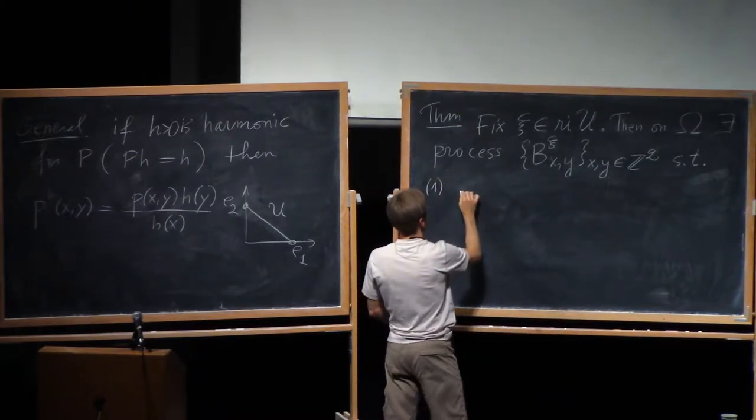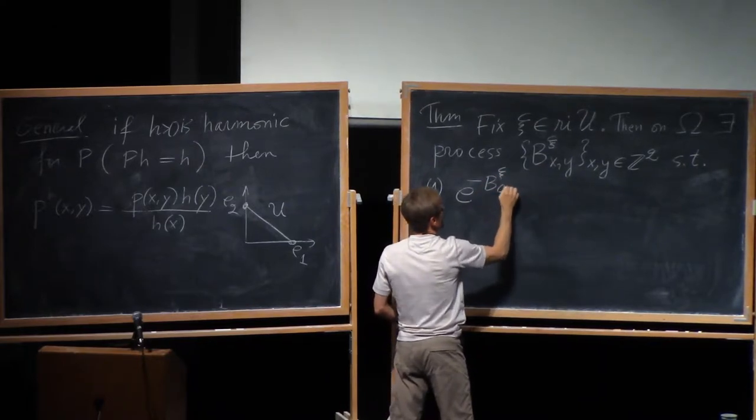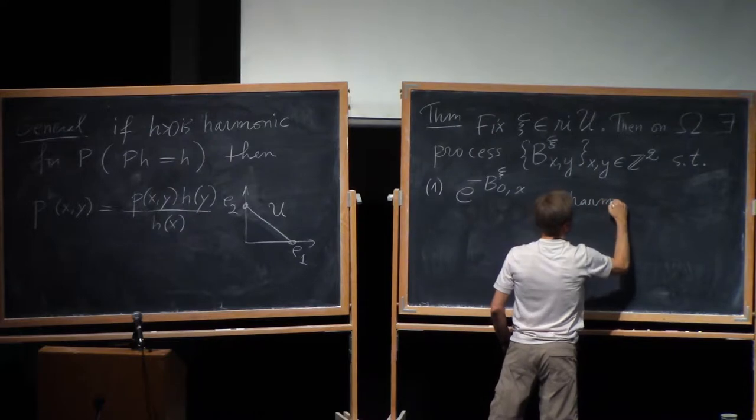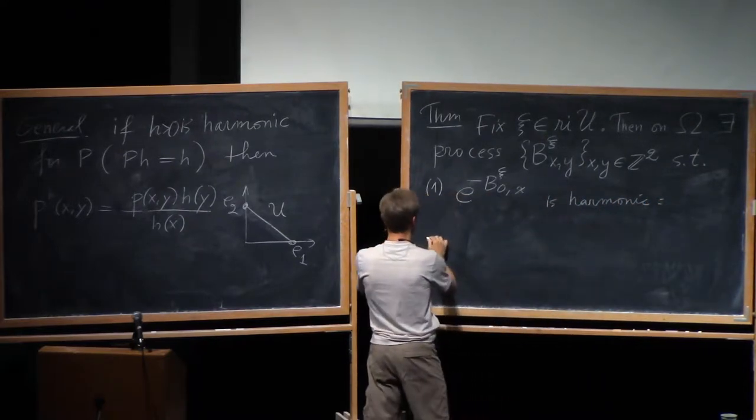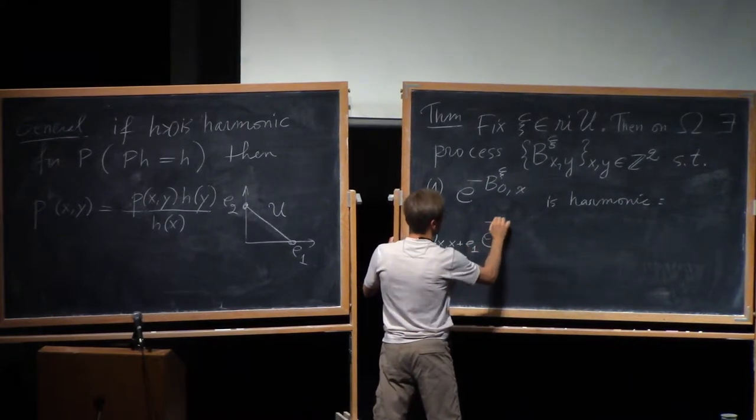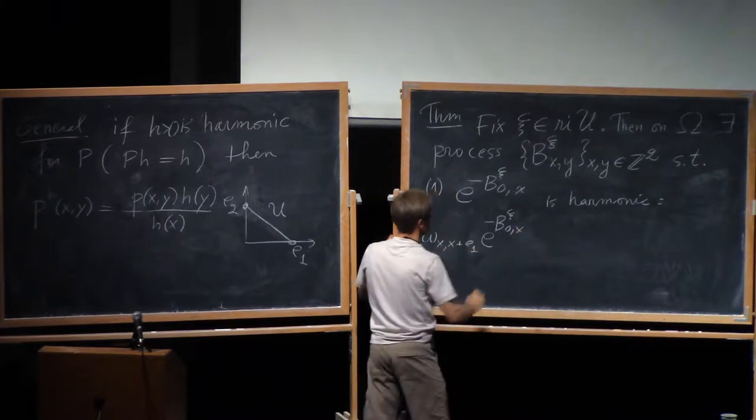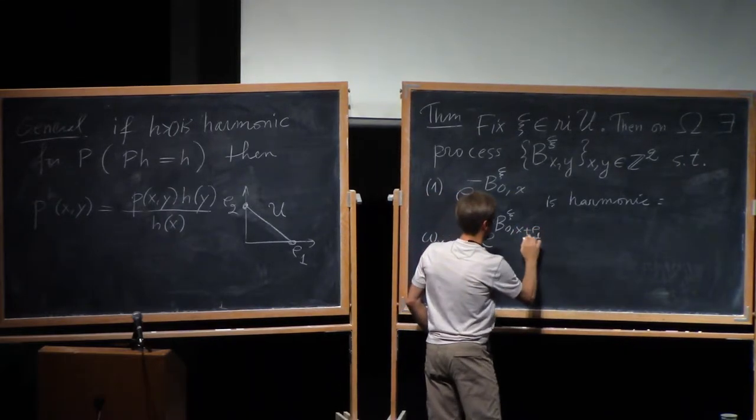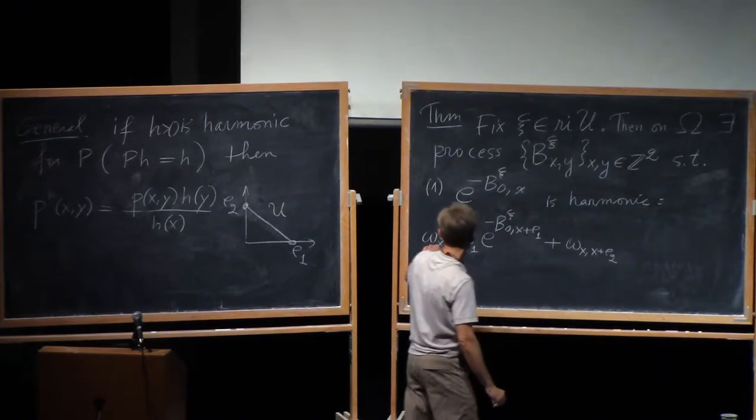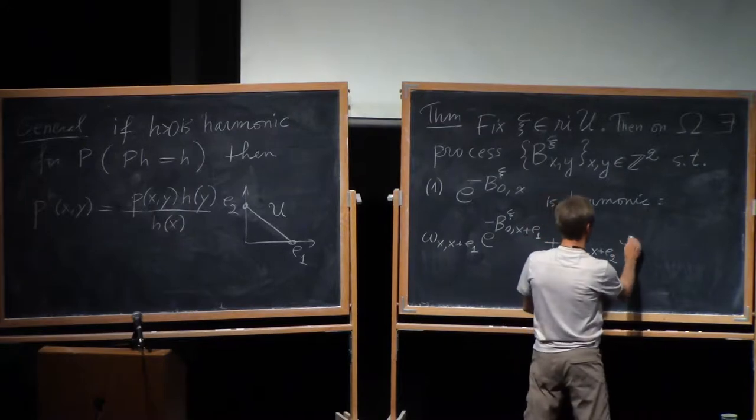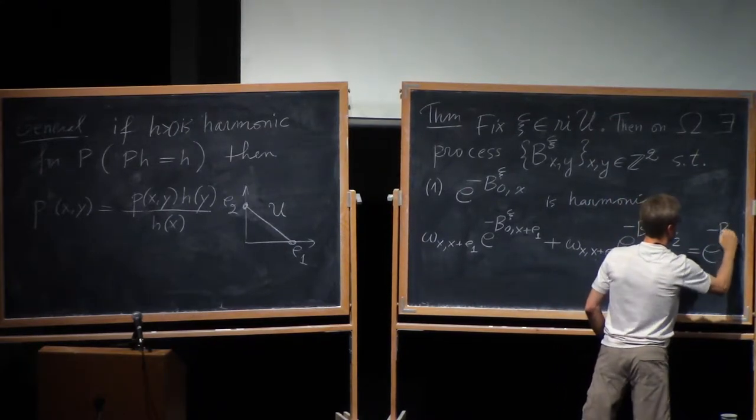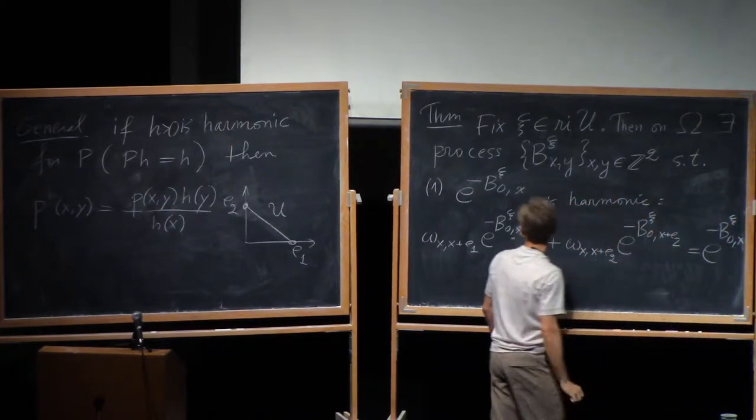First of all, if I take e to the negative b, 0x, then this is harmonic. So as a function of x. So let me write explicitly what that means. So it means that if I start from x and I look at the average of this function e to the minus b going one step, then that average is the same as the function at the place where I started.